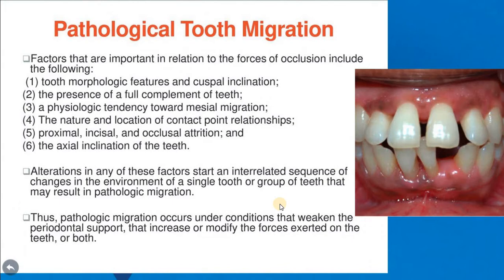Factors important in relation to the forces of occlusion include: morphology of the tooth, presence of full complement of teeth, physiological tendency toward mesial migration and presence of spaces, the nature and location of contact point relationships, proximal incisal and occlusal attrition, and the axial inclination of the teeth. If there is alteration in any of these factors, there will be a start of an interrelated sequence of changes in the environment of a single tooth or group of teeth that may result in pathological migration.